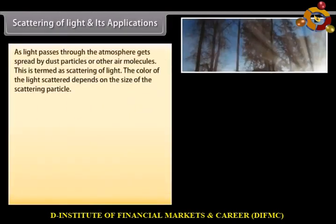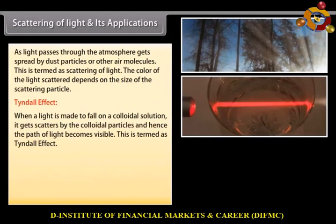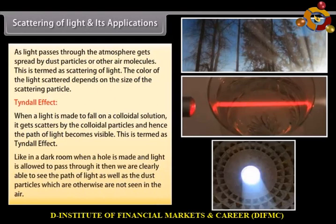Scattering of Light and its Applications. As light passes through the atmosphere, it gets spread by dust particles or other air molecules. This is termed as scattering of light. The color of light scattered depends on the size of the scattering particle. Tyndall Effect — when light is made to fall on a colloidal solution, it gets scattered by the colloidal particles and hence the path of light becomes visible. This is termed as the Tyndall effect. For example, in a dark room, when a hole is made and light is allowed to pass through it, we can clearly see the path of light as well as the dust particles which are otherwise not visible in the air.